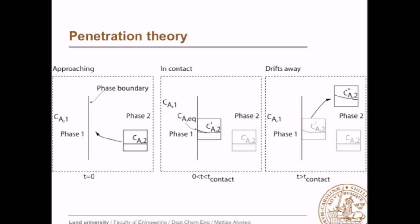When we talked about the two-film theory, we said that the only thing that happens in the film is diffusion. In the penetration theory, we instead consider both diffusion and convection. Close to the phase boundary, we have a package that moves by convection and approaches the phase boundary. Once it has arrived at the phase boundary, it stays there for a while, and the concentration gradient changes within this small volume. The straight line is the concentration gradient before contact — just a constant. While in contact, the concentration close to the boundary increases while remaining fairly constant a bit away. After a certain contact time, this package moves away again from the phase boundary.